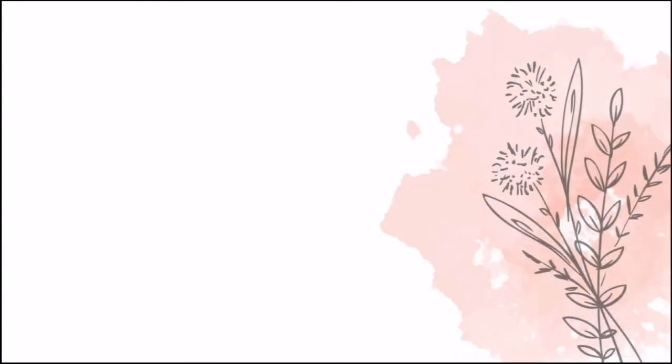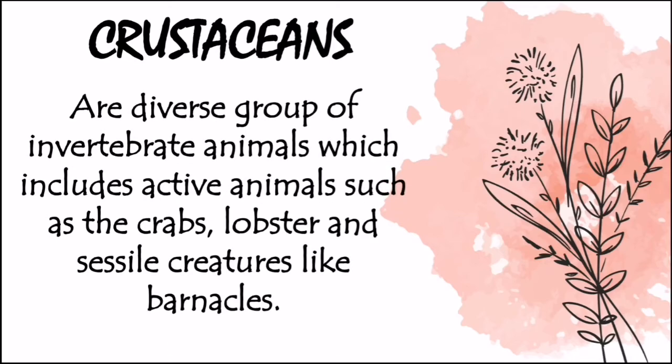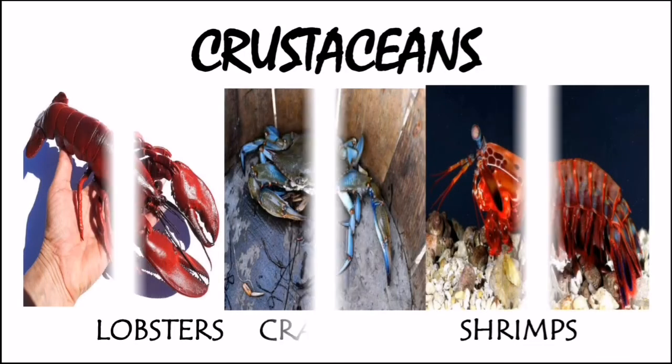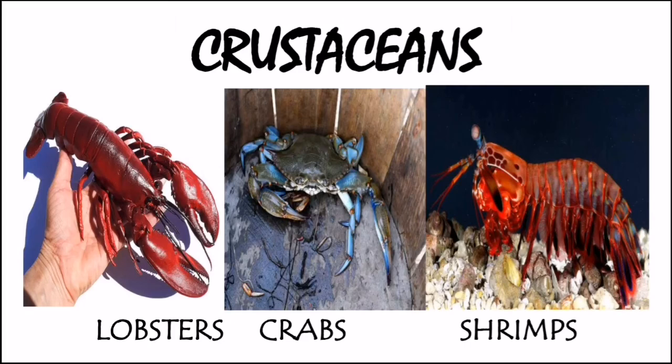For the last subphylum of Arthropoda, we have crustaceans. These are a diverse group of invertebrate animals, which includes active animals such as crabs and lobster, and sessile creatures like barnacles. It has an exoskeleton made of calcium, two compound eyes, two antennae, three pairs of mouthparts, and swimming legs. Crustaceans practically have their shells, and these shells make them different from arachnids and Insecta.